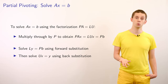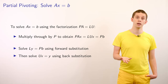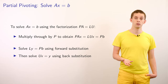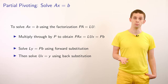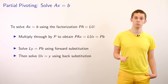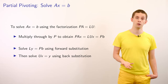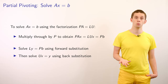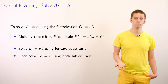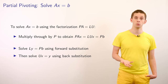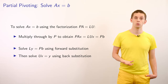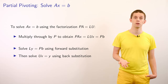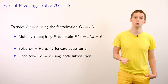To solve Ax = b using the factorization PA = LU, we multiply through by P to get P·A·x = L·U·x = P·b. We then solve LY = PB by forward substitution, and finally solve UX = Y by back substitution. We'll now take a look at doing these calculations in Python using the LU factorization routine with pivoting.